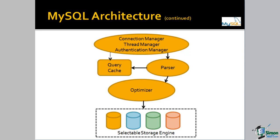One of the components within the optimizer category is going to execute that query against the storage engine. The MySQL architecture allows us to plug different storage engines into the database architecture, and we can mix those storage engines for our application. There is a good selection of different types of storage engines which we can select from or combine to best serve our application. With this high-level framework in mind, let's take a step down and look at each of the components within these categories.